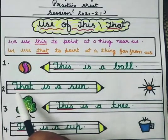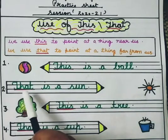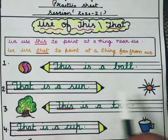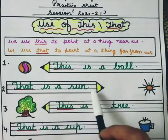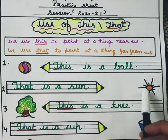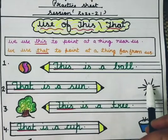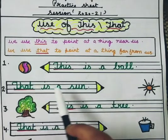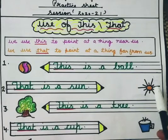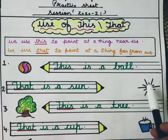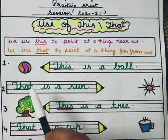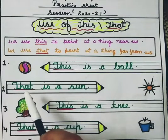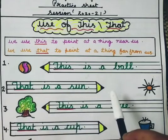Second example is the sun. That is the sun — you can see it. We have used that here because the sun is far away. So we have used that. That is the sun.